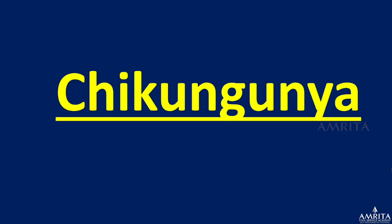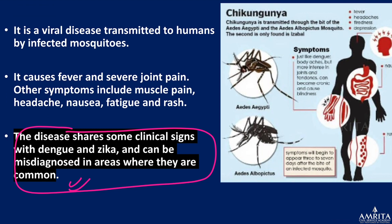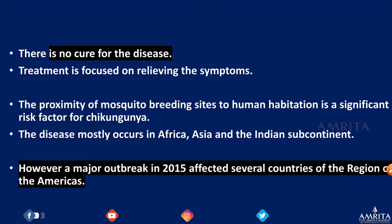Anopheles is responsible for malaria. Culex is responsible for Japanese encephalitis, lymphatic filariasis (elephantiasis), and West Nile fever. We have already discussed Kyasanur Forest Disease (monkey fever), endemic to southern India. Today we will cover kala-azar. Let's start one by one with Aedes aegypti. Chikungunya shares symptoms with dengue and Zika, which is why misdiagnosis is very common.